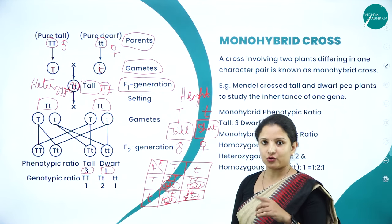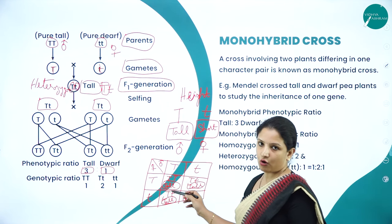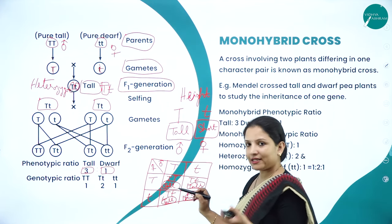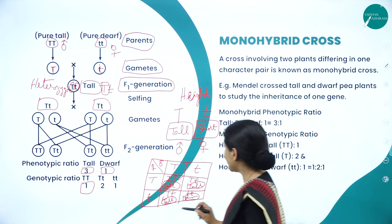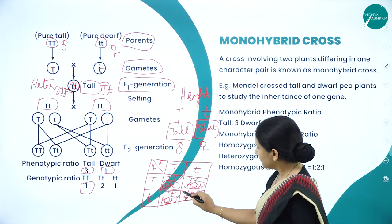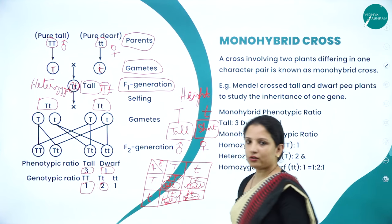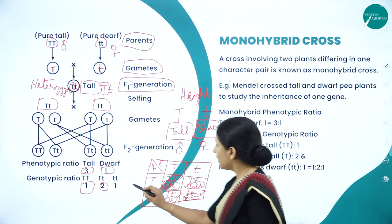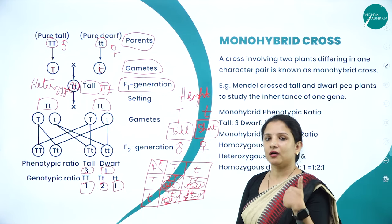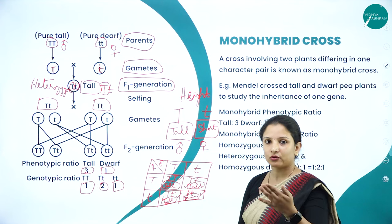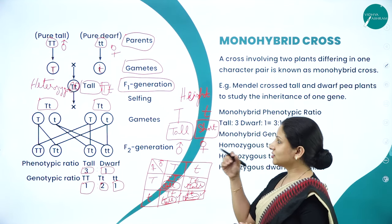For genotypic ratio, we look at what genes are present inside the cells — those genes responsible for the character of that particular plant, be it tall or dwarf. How many homozygous tall (TT)? One. How many heterozygous tall (Tt)? Two. How many homozygous dwarf (tt)? One. Heterozygous dwarf is not possible — if it is capital T and small t, only the tall character is expressed. So the genotypic ratio is 1 TT : 2 Tt : 1 tt.